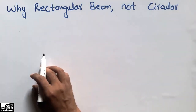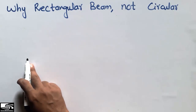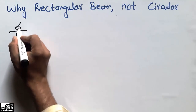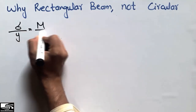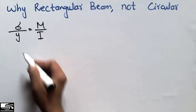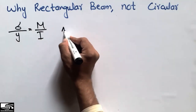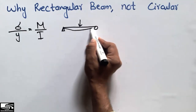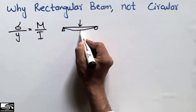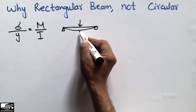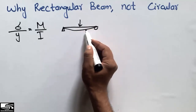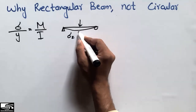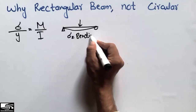Let's explain the first reason why we use the rectangular beam. You may have seen the bending formula: σ/y = M/I, where σ is the bending stress. Consider a simply supported beam — when a load acts on this beam, it deflects and bending is produced. Due to this bending, bending stresses are created in the beam, represented by σ.